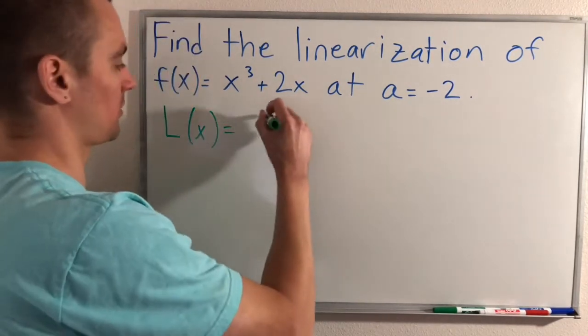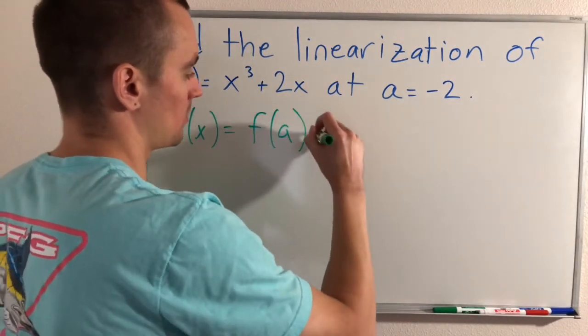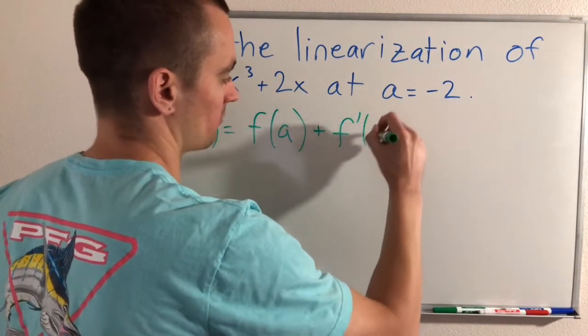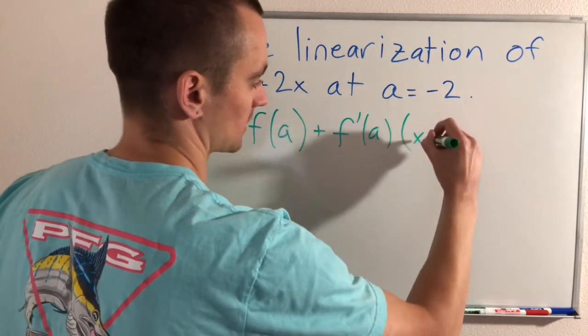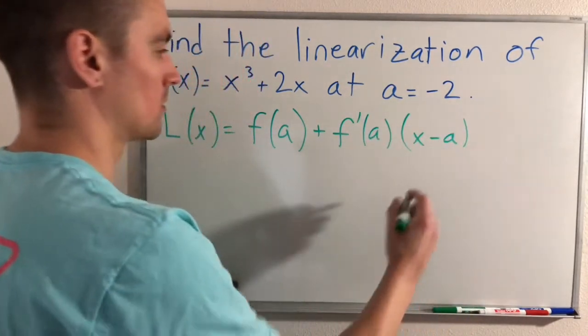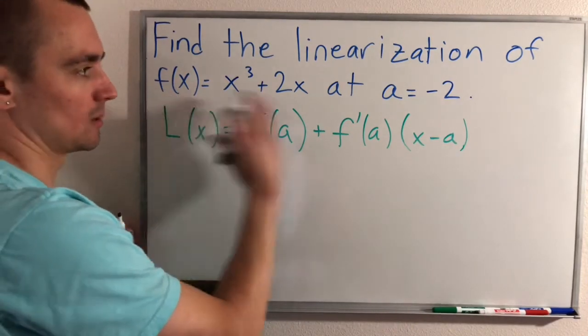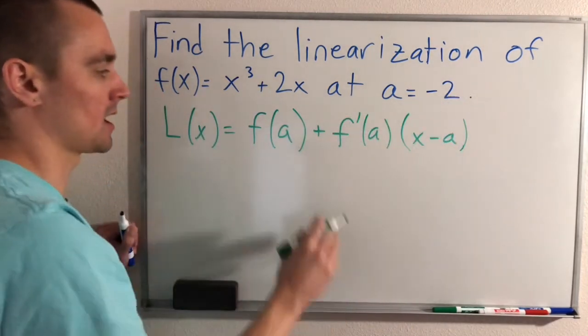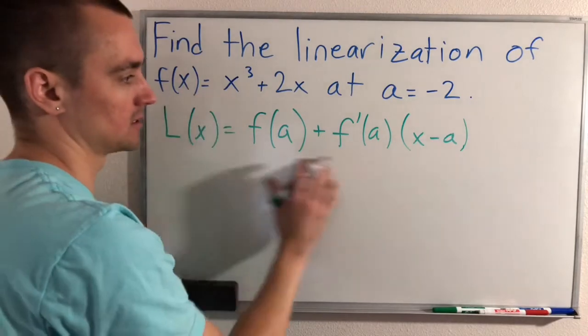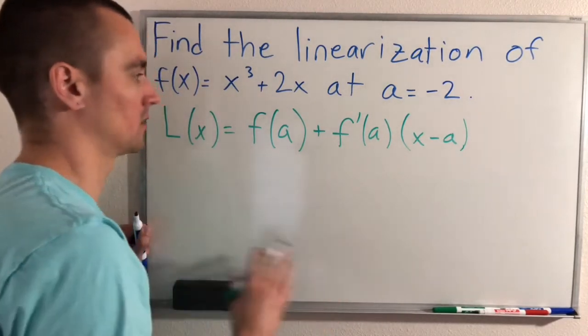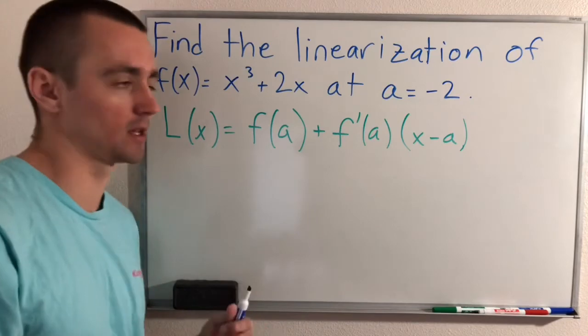f(a) plus f'(a) times (x - a). So we have our f(x) here. We're going to use this and we're going to use the given a that we're looking at and just plug that into this linearization formula of what a linearization of a function at a point is.